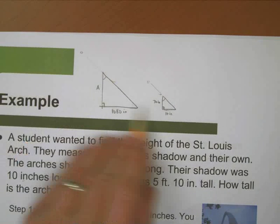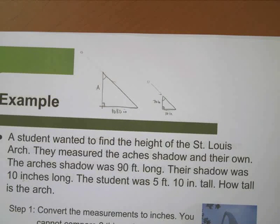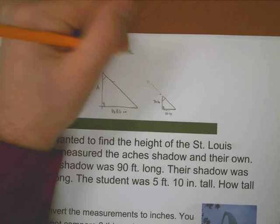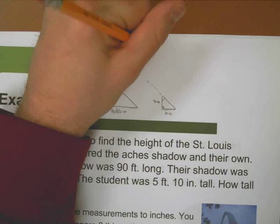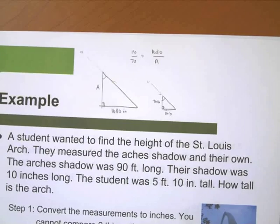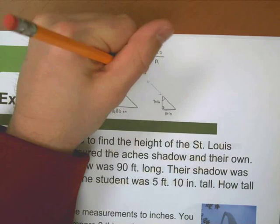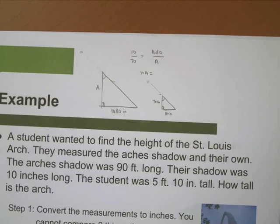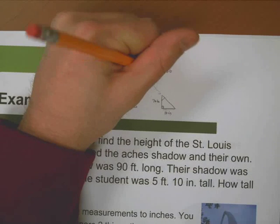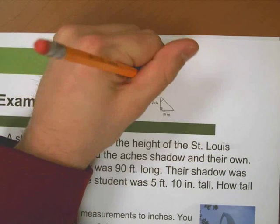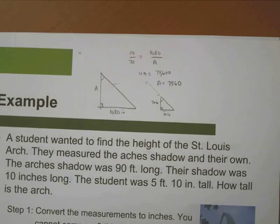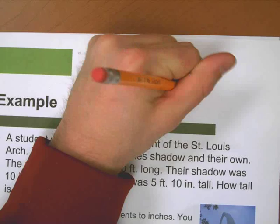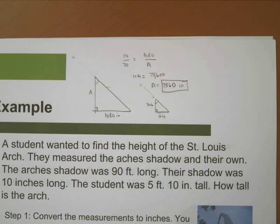If I want to solve for A, I have a nice little proportion problem set up. I can say that 10 is to 70 as 1,080 is to A. Now I just need to cross multiply. 10 times A is 10A. 1,080 times 70 is 75,600. I divide out the 10, and A is equal to 7,560. Now, as long as I put a unit in - remember we were working in inches - I could say 7,560 inches.